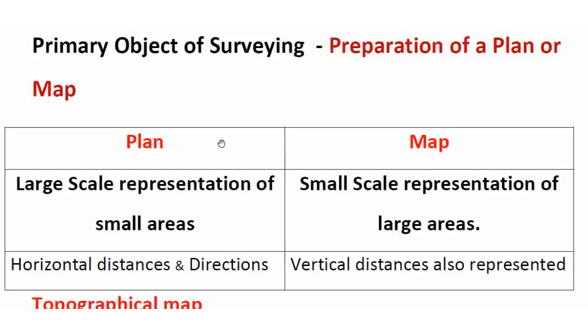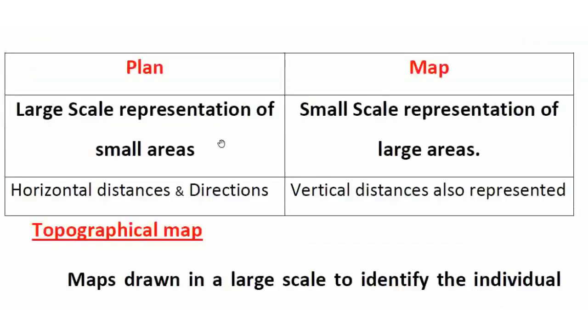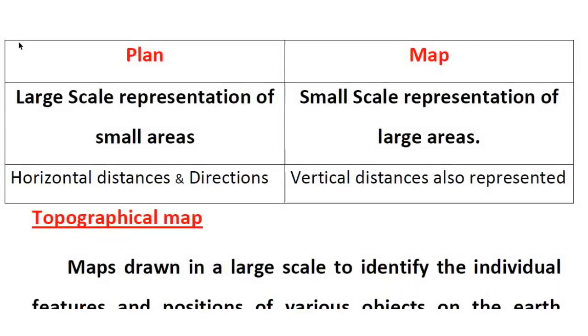Next are technical terms: plan, map, topographical map, triangulation, etc. A plan or map is a graphical representation of the features of the earth's surface. We represent the features of the earth's surface graphically. Plan is large scale and map is small scale. Large scale means small areas — for example, a building is a small area, so it is a large scale representation.